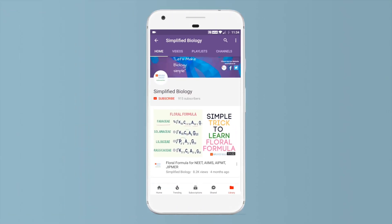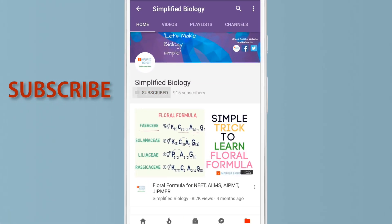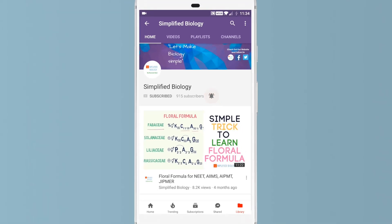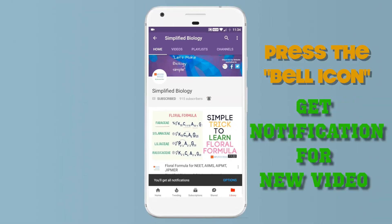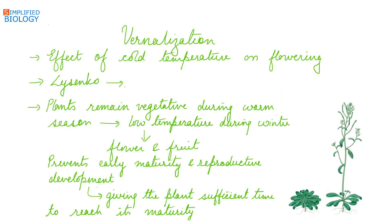Welcome to Simplified Biology. Today's topic is vernalization. Vernalization is the effect of cold temperature on flowering. It was Lysenko who first reported the effect of cold temperature on flowering.